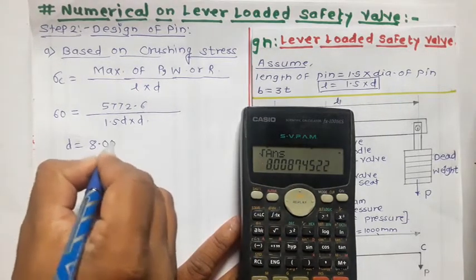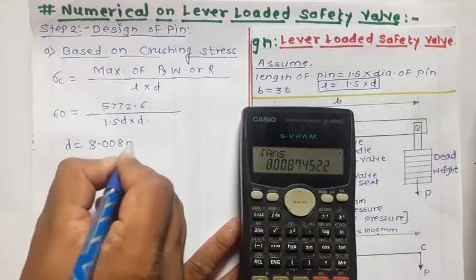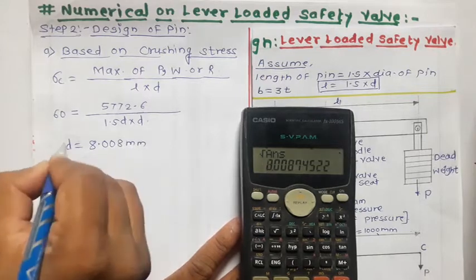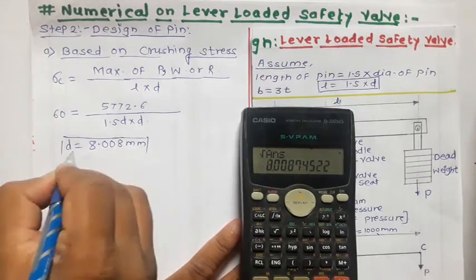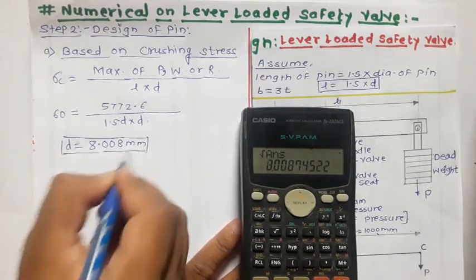So the answer is 8.008 mm. This is the diameter of pin based on crushing stress.